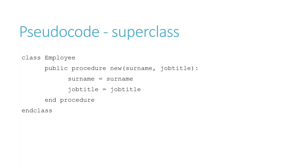Here's an example in pseudocode, taken from an imaginary HR personnel management program. Employees of a company have two attributes — I know in real life there'd be more than this — but two attributes: a surname and a job title, both of which are sent from the main program as parameters.